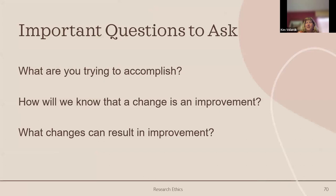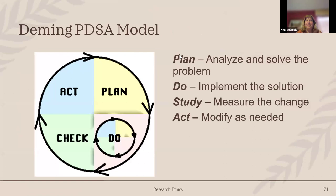Key questions to consider: what are you trying to accomplish, how will you know that a change is an improvement, and what changes could result in that improvement? These help you establish whether you have a research hypothesis. The Deming PDSA model — Plan, Do, Study, Act — is a framework for quality improvement and would fall under not human subject research.